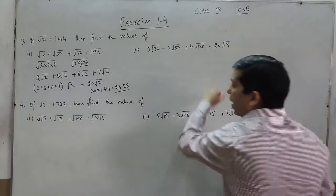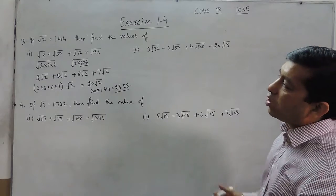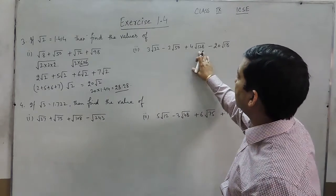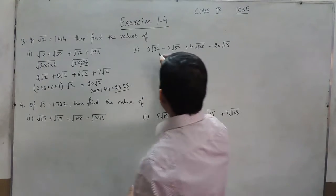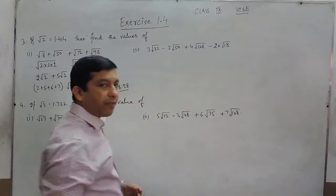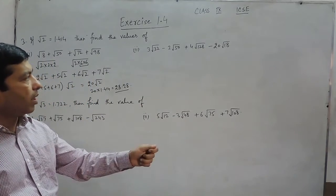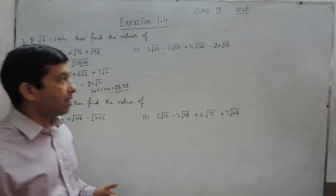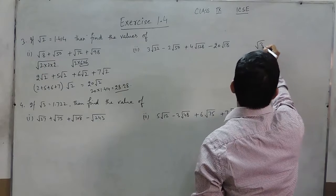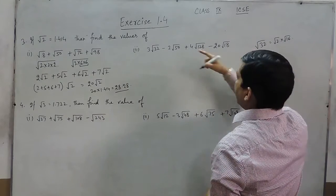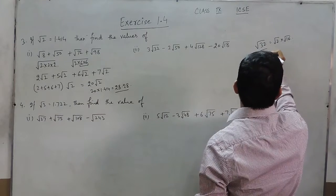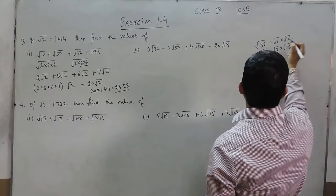Again in this part, because only the value of √2 is given, all these terms can be written in the form of √2. When I talk about 32, if I take √2 common it will remain 16. Same way, √32 can be written as √2 × √16. √50 can be written as √2 and √25.